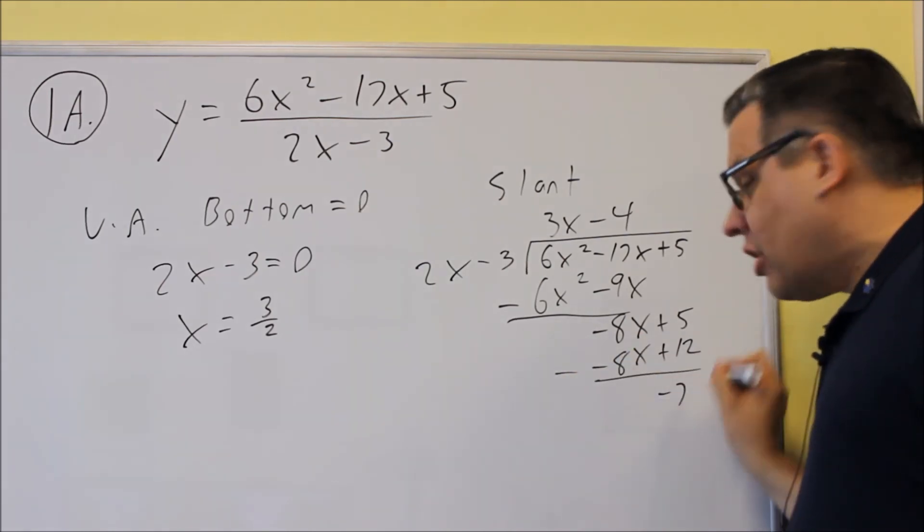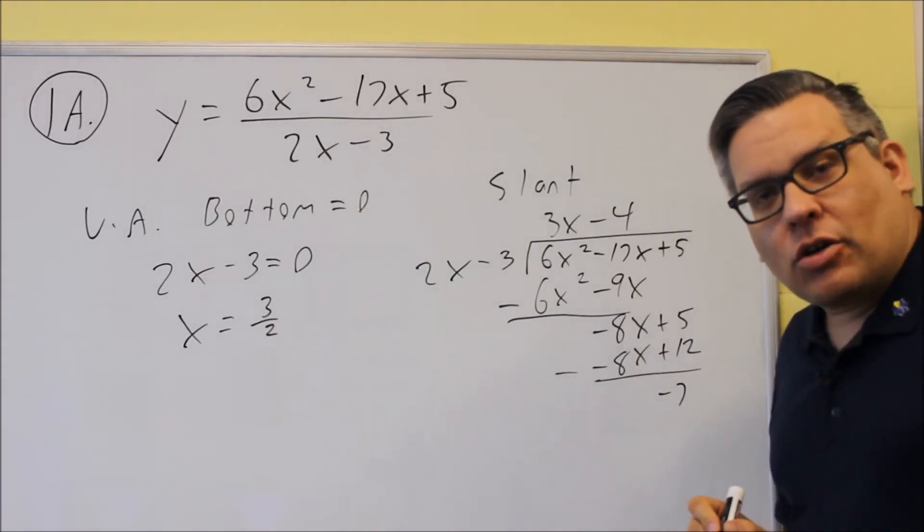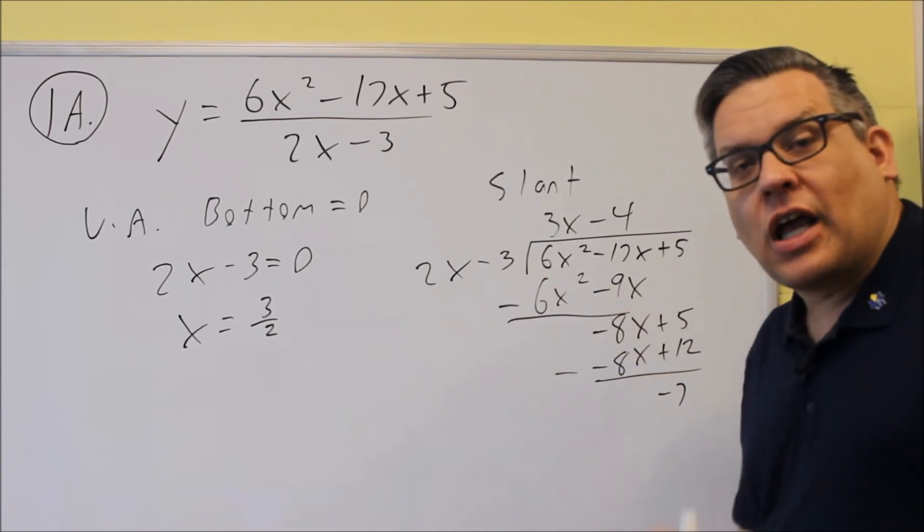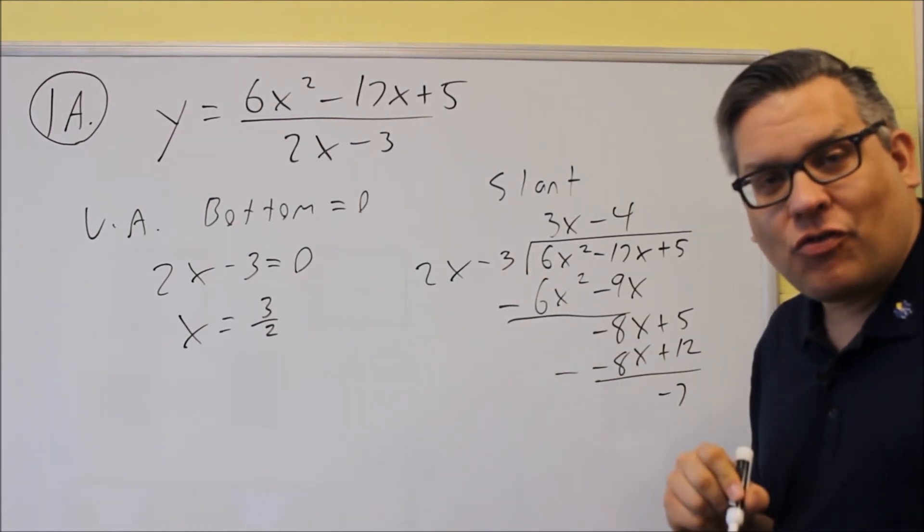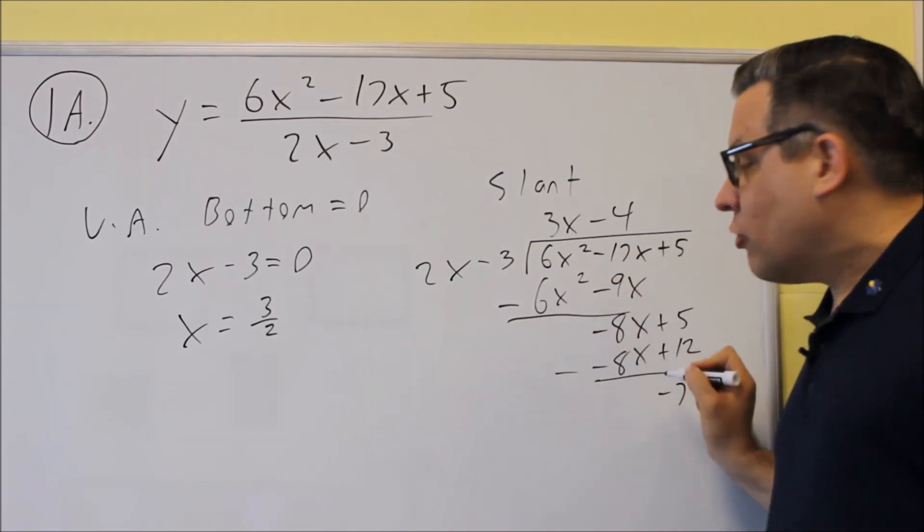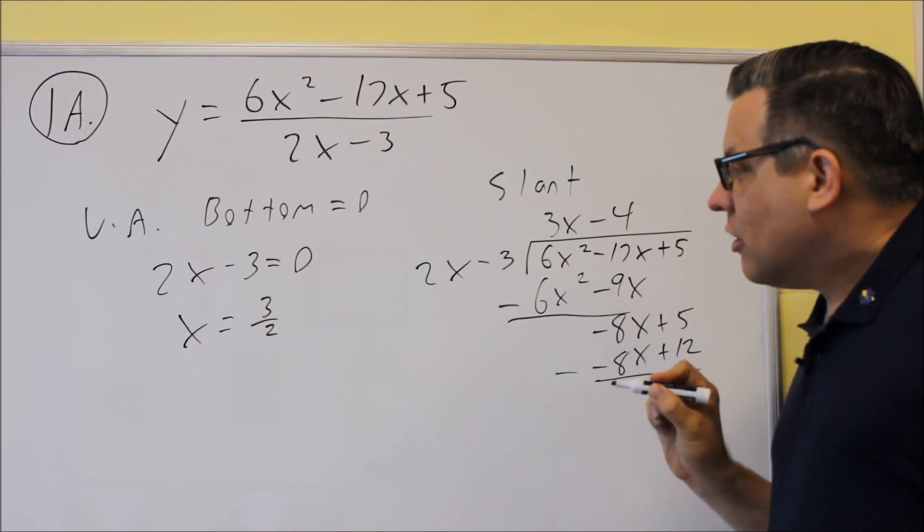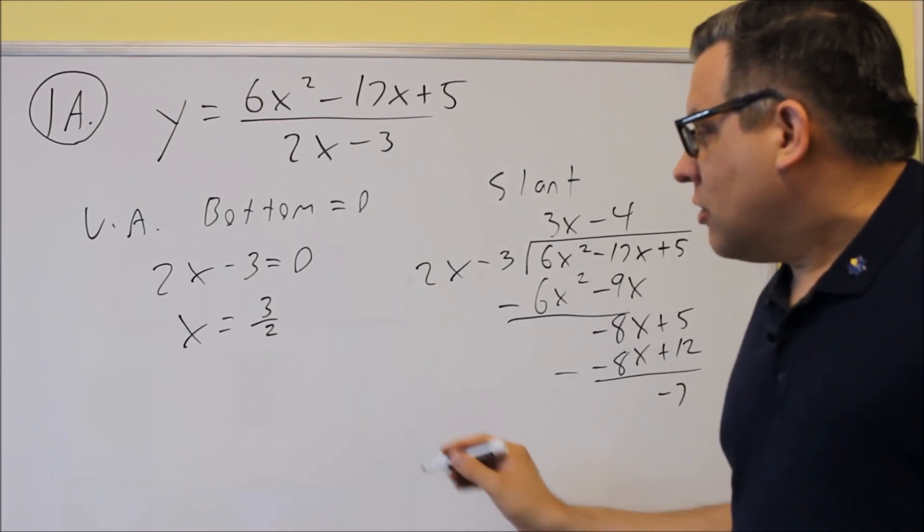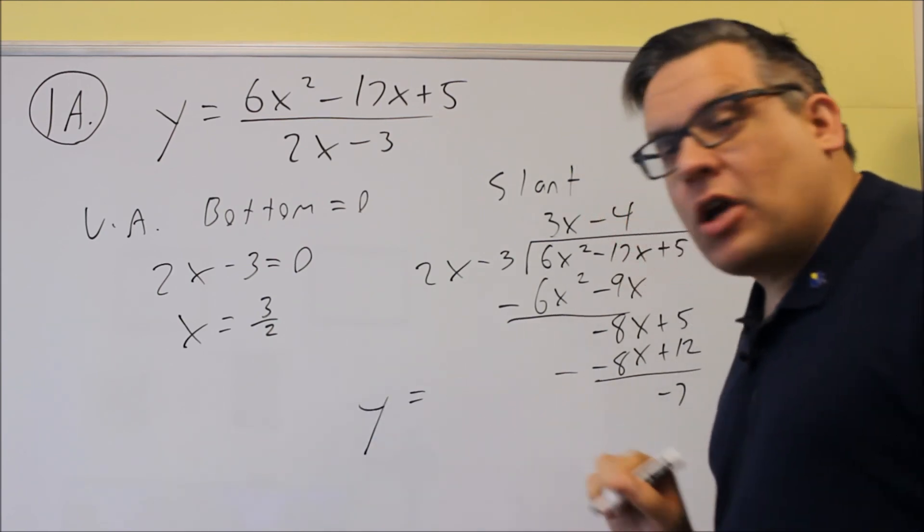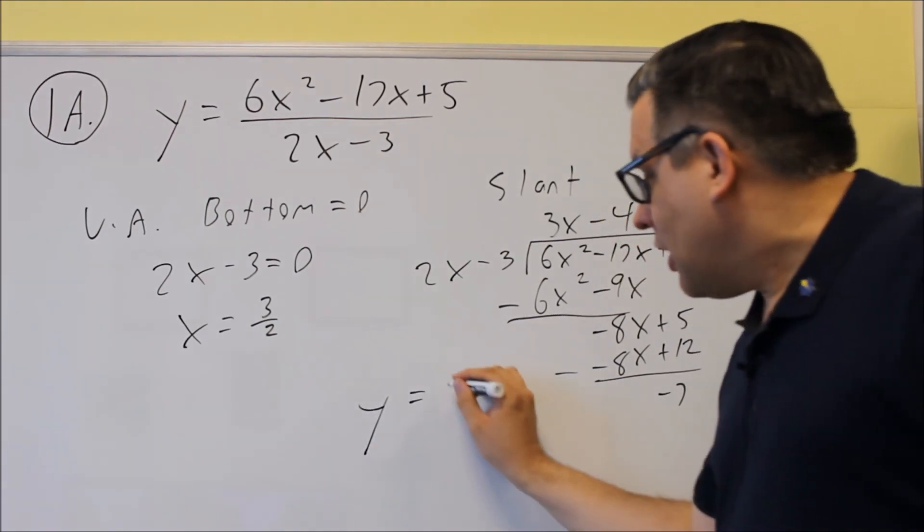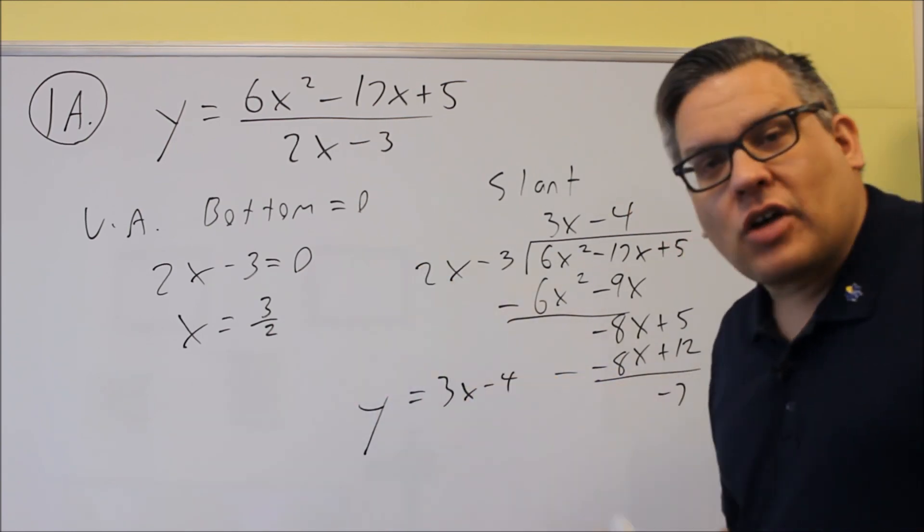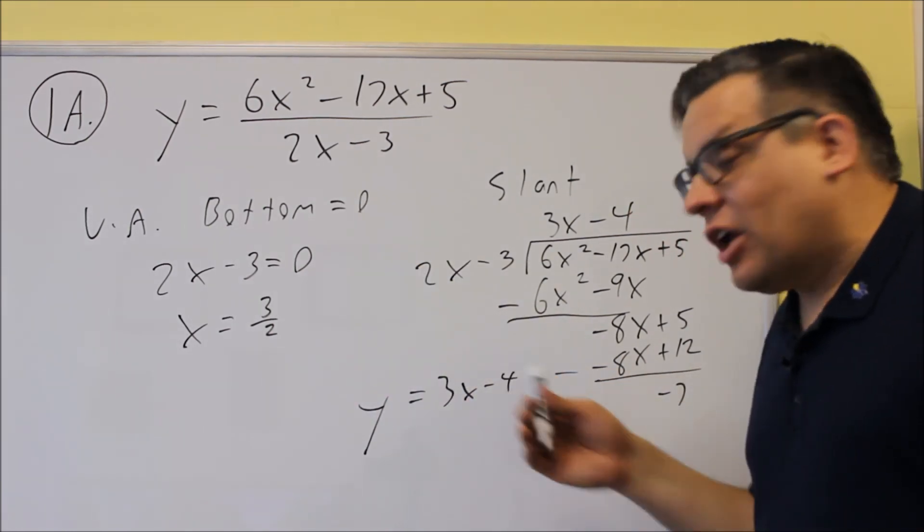Now when you write your answer, we're going to ignore the remainder, because if I take the remainder over 2x plus 3 and I have x going to infinity or negative infinity, that last part is going to end up going to 0. So we don't need the remainder, all we need is this part here. So when you write your answer, we have x equals for your vertical asymptote. Now for this one, you want to make sure you put y equals. It's going to be 3x minus 4. So you have your vertical asymptote and you have your slant asymptote.